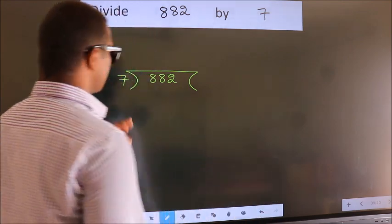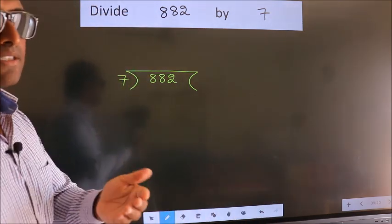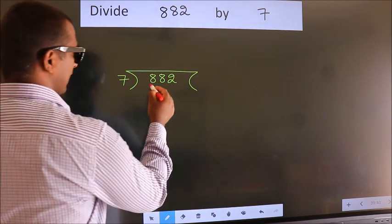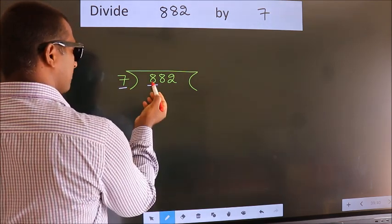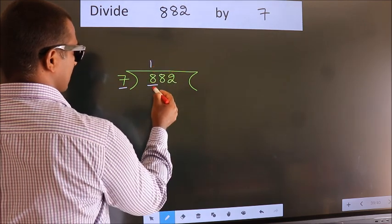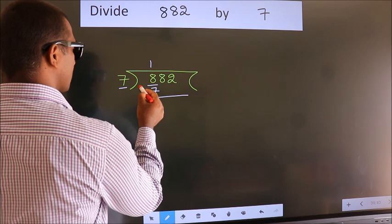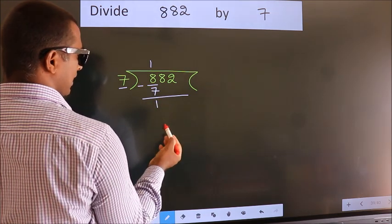This is your step 1. Next, here we have 8, here 7. A number close to 8 in 7 table is 7 once 7. Now, we should subtract. We get 1.